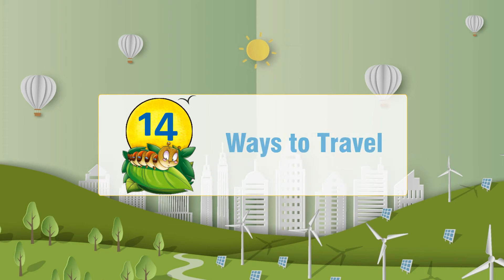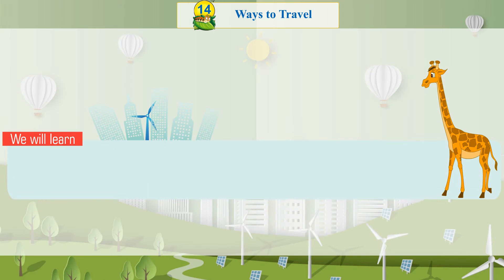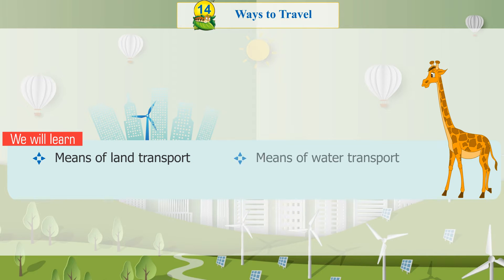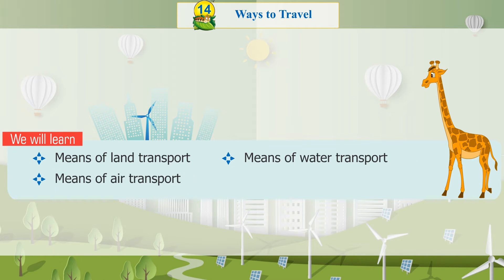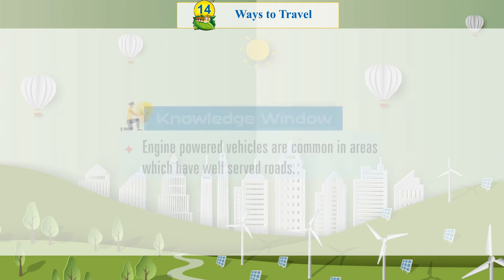Chapter 14: Ways to Travel. We will learn about means of land transport, means of water transport, means of air transport, and special transport.